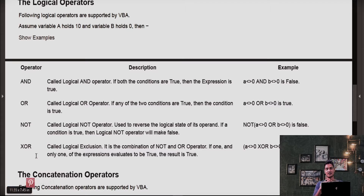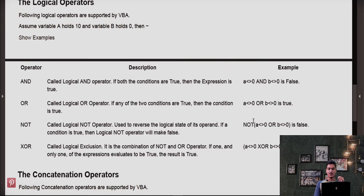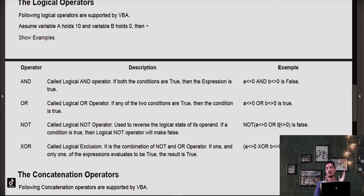Now the NOT operator: if an expression value is true and we apply NOT, the value becomes false. If the expression value is false and we apply NOT, it becomes true — NOT simply reverses the result. Here A not-equal-to 0 is true and B not-equal-to 0 is false; AND gives true. Applying NOT to true gives false.